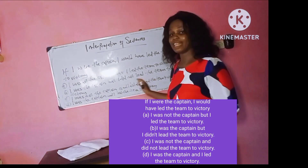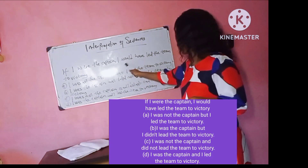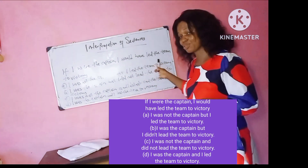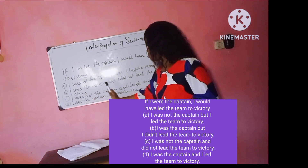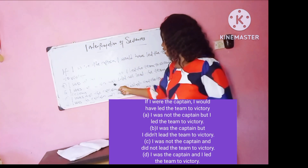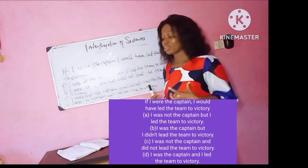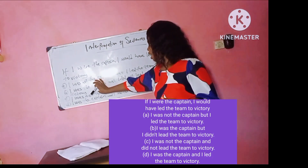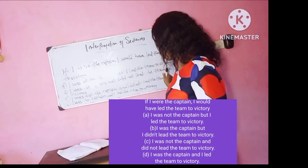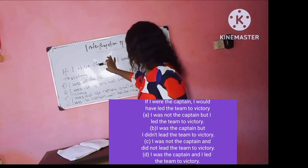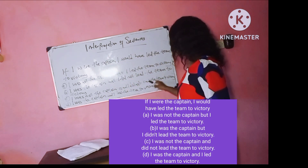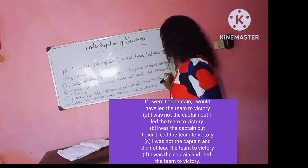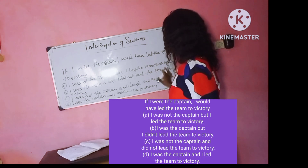Now let's look at the second clause. Option B says 'But I led the team to victory' — is that correct? 'I would have led the team to victory' — so it's not correct. This person is suggesting he was not the captain, which is why he did not lead the team to victory. Option C: 'I was the captain' — does it interpret the first clause correctly? No, it does not. 'If I were the captain' means I was not the captain, so 'I was the captain' is incorrect. The correct answer is: 'I was not the captain and I did not lead the team to victory.'